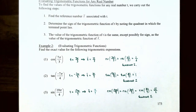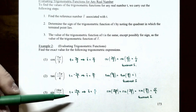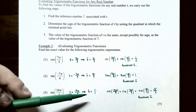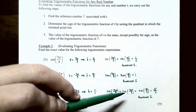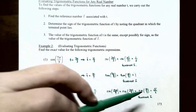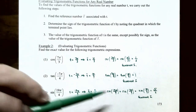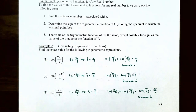Number 3: sine of 19π/4. Two full revolutions is 16π/4 or 4π, so we're 3π/4 beyond two revolutions — placing us in quadrant 2. The reference number t-bar is π/4 because we're only π/4 short of a half turn. Since we're in quadrant 2, the y-coordinate is positive, so sine of 19π/4 equals sine of 3π/4, which equals sine of π/4, giving us √2/2.